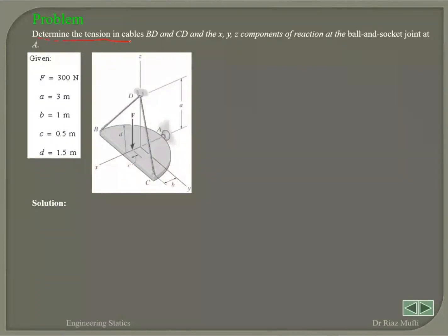Determine the tension in cables BD and CD, and the xyz components of the reaction at the ball socket at A. You've got the force being applied at the center which is 300 Newton.